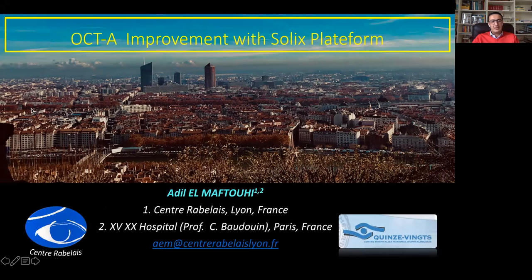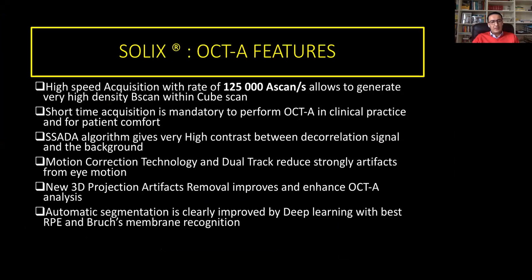Today I'm talking about the latest OCTA improvements with the Solix platform. Solix platform has a specific feature: first, high-speed acquisition with a rate of 100 to 25,000 scans per second, which allows generating very high-density B-scans with a cube scan.